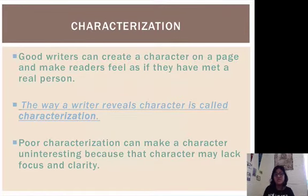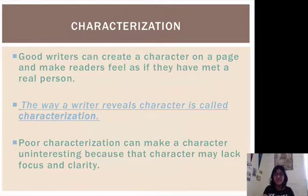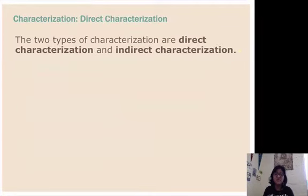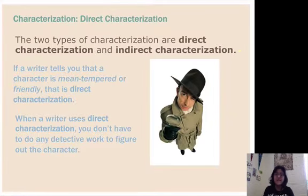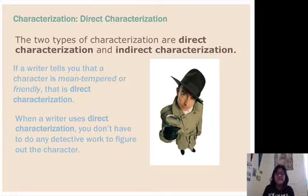Poor characterization can make a character uninteresting because that character lacks focus and clarity. In this video, we're going to talk about two different types of characterization: direct and indirect. Direct characterization is what it sounds like — it's when the author tells you directly what a character is like. For example, 'the character was mean-tempered' or 'the character was friendly.'